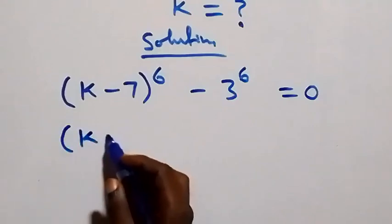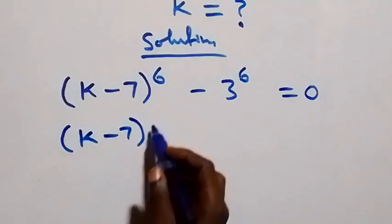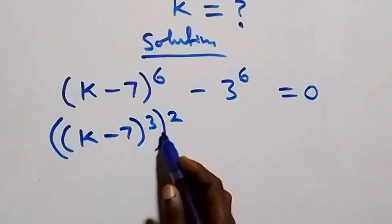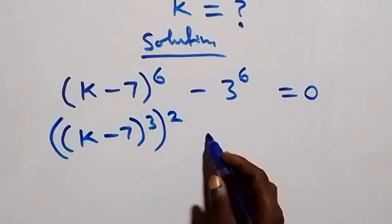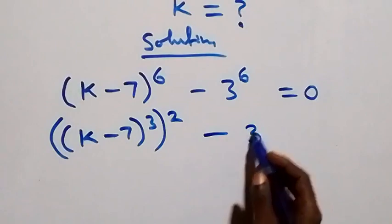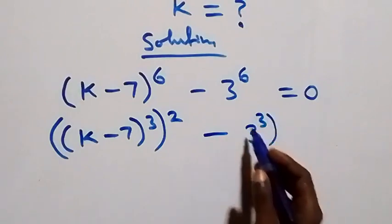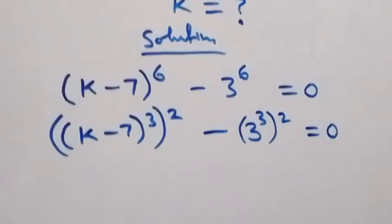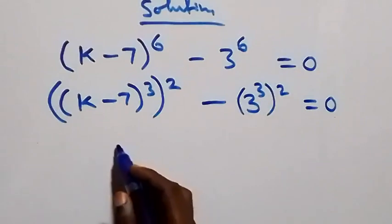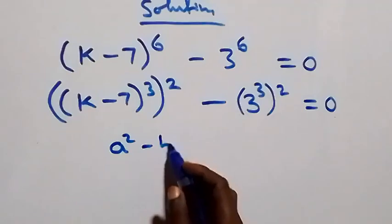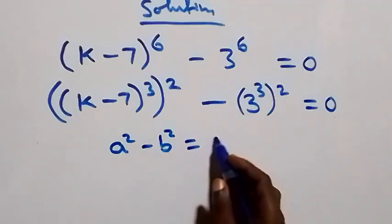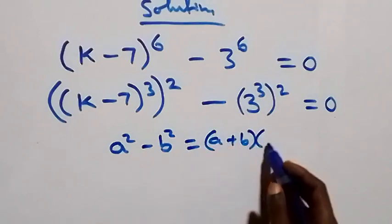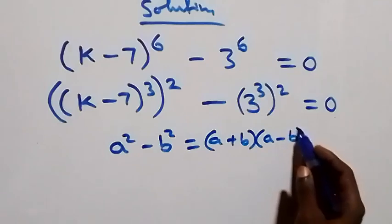We rewrite as k minus 7 raised to power 3, then raised to power 2, minus 3 raised to power 3, then raised to power 2, equals zero. This follows from a squared minus b squared, which equals a plus b into bracket a minus b.